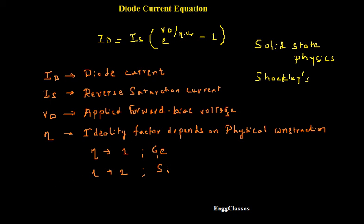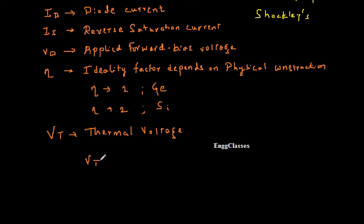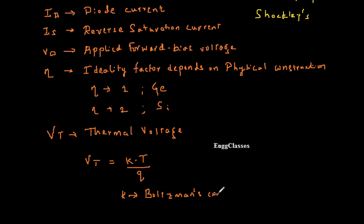The last parameter is Vt, which we call the thermal voltage. Vt is equal to K into T divided by Q. K is the Boltzmann constant, whose value is 1.38 into 10 to the power minus 23 Joules per Kelvin.